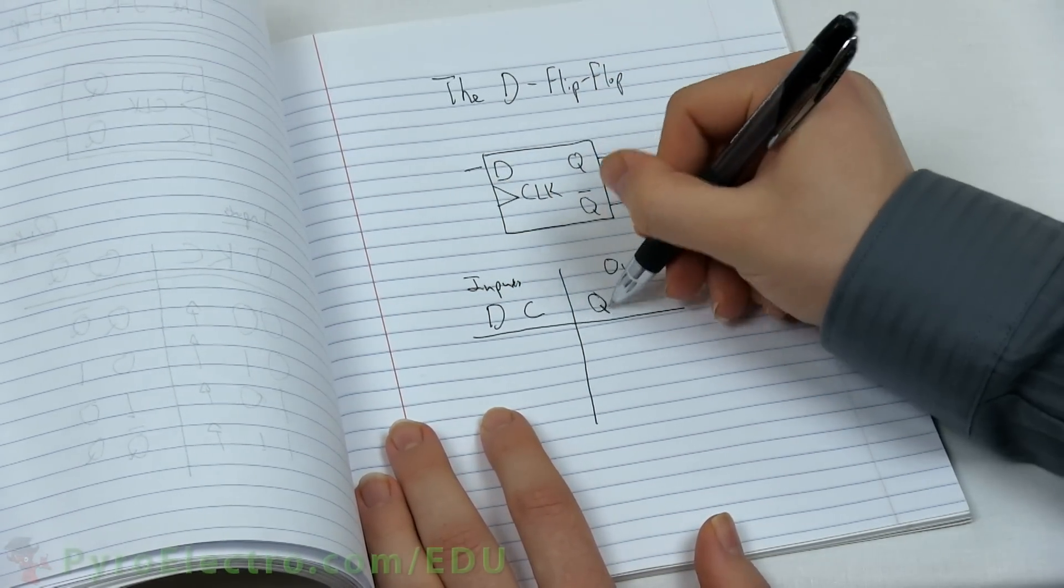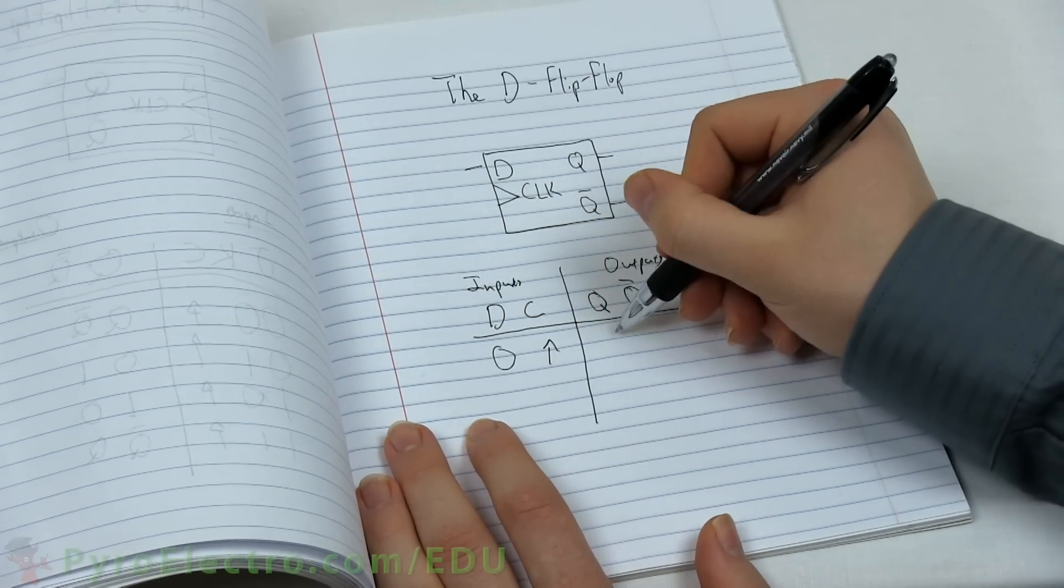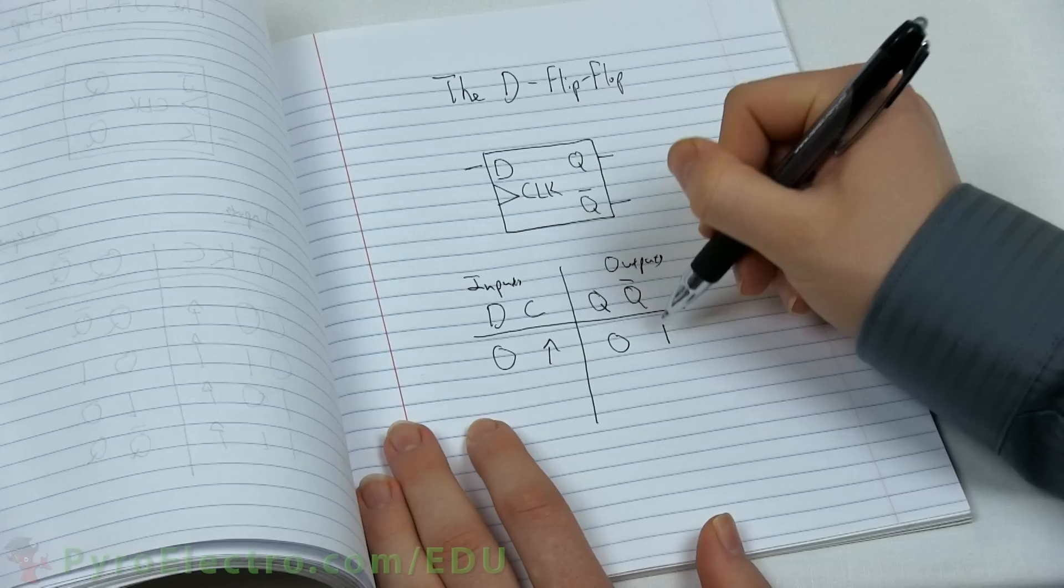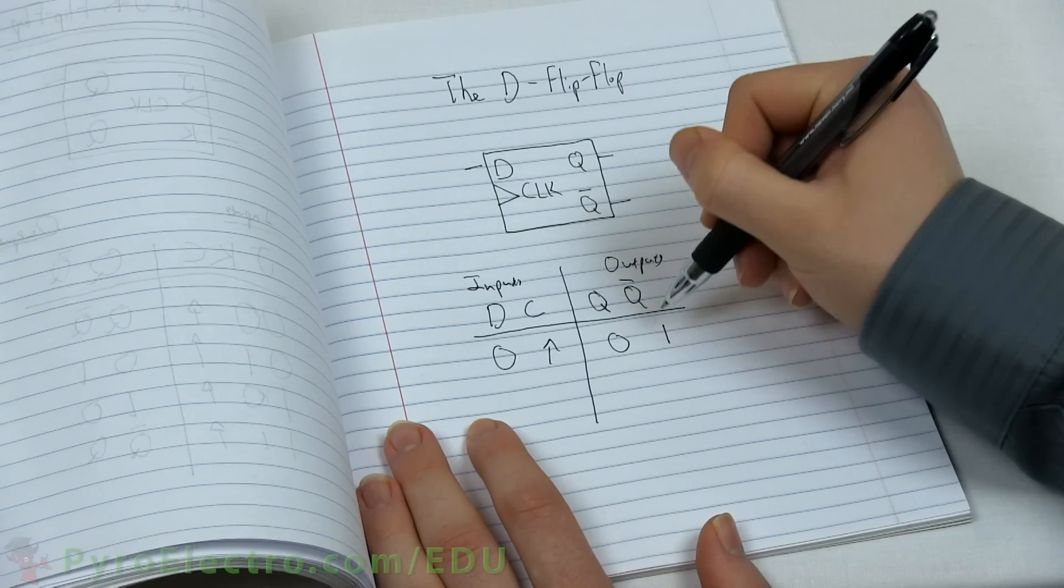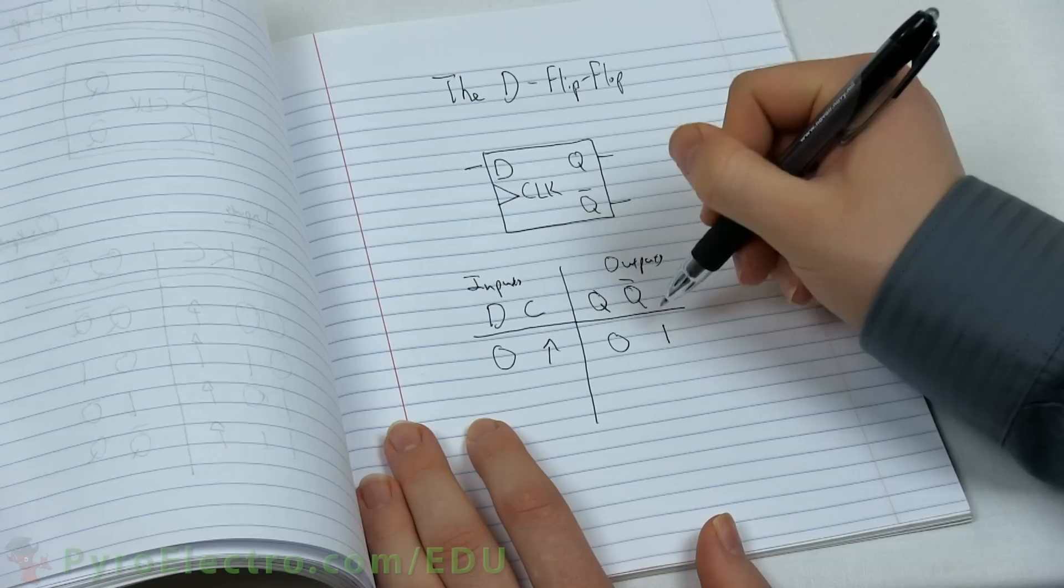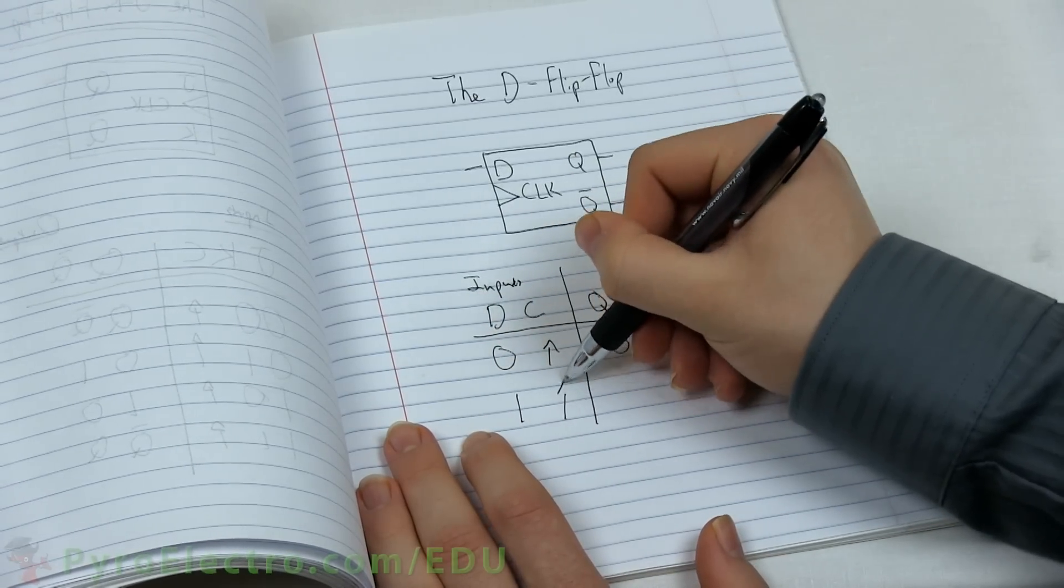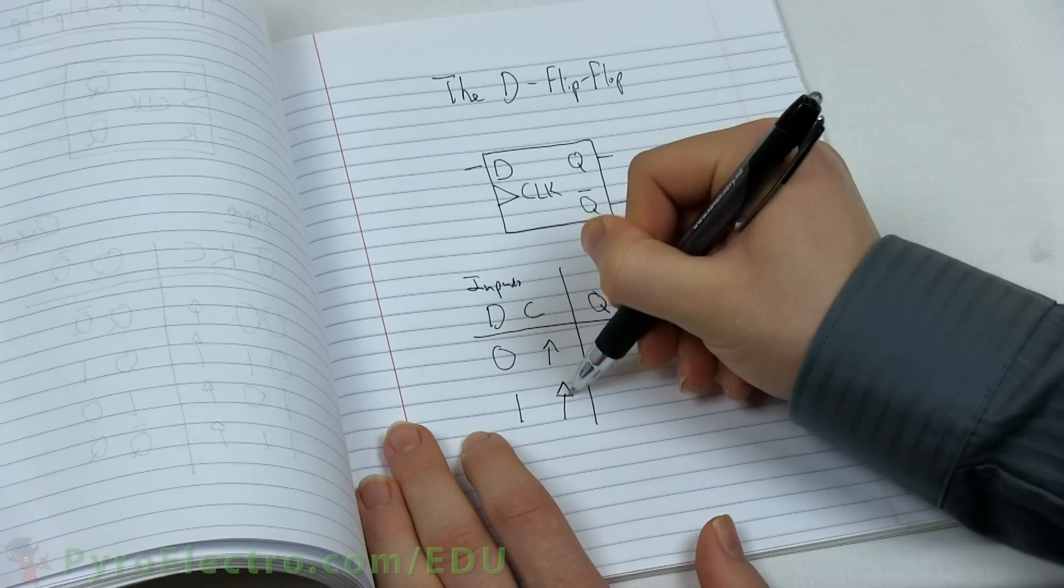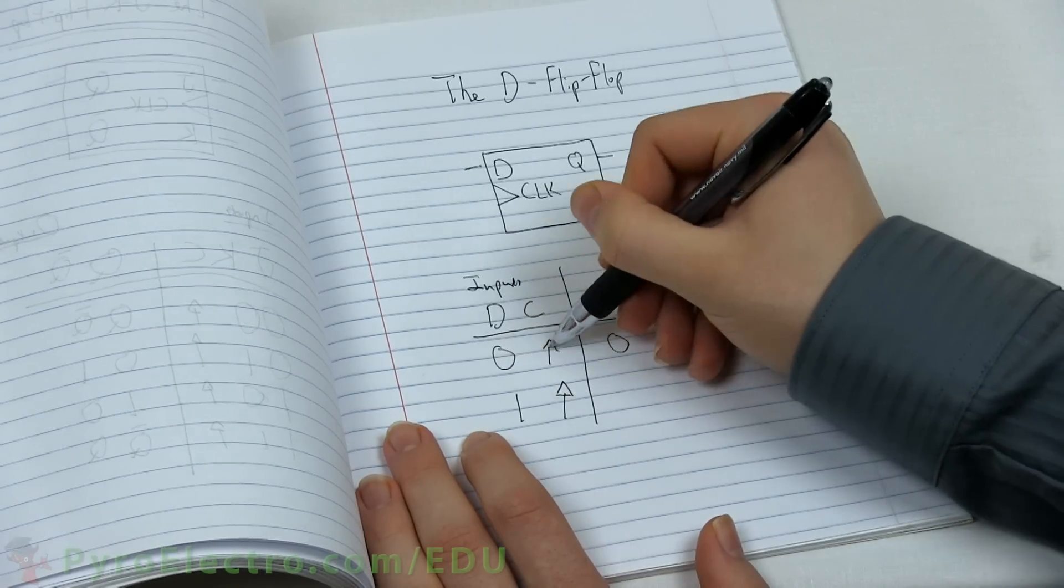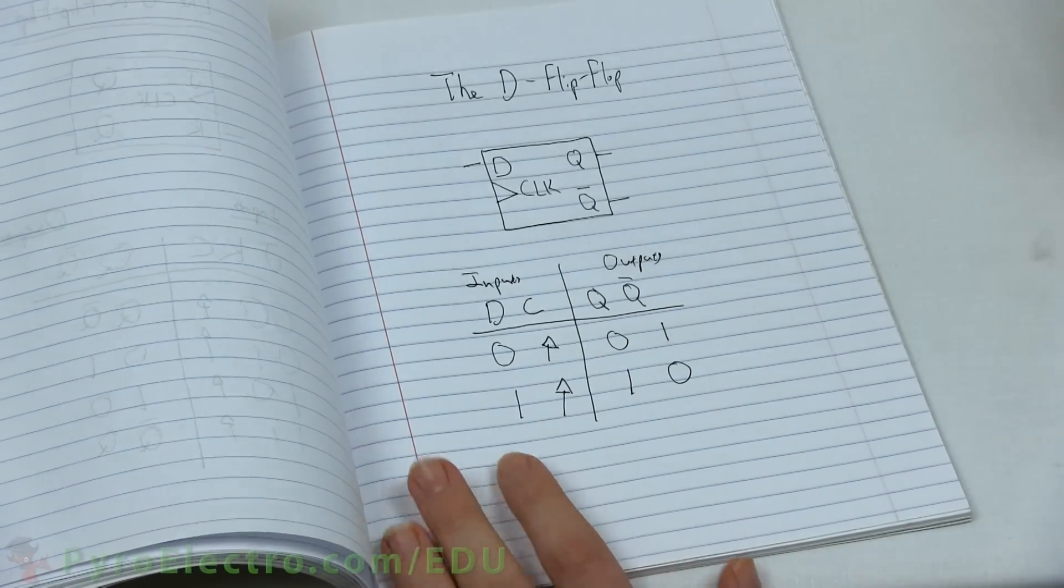When a logic 0 is present at the D input, if the clock signal goes from logic 0 to logic 1, that 0 at the D input is transferred to Q as a logic 0 and Q bar as a logic 1. Alternatively, when a logic 1 is present at the D input, if the clock signal changes from logic 0 to logic 1, then that logic 1 is transferred to the Q output and Q bar becomes logic 0.